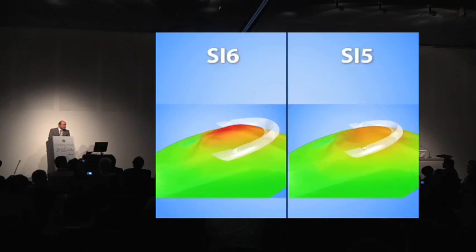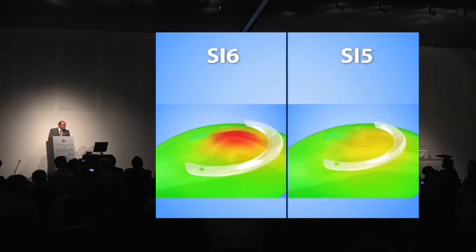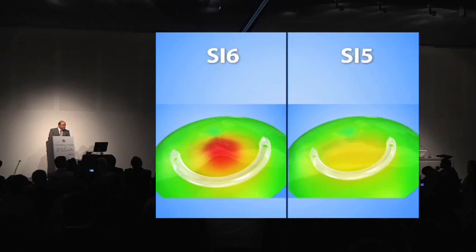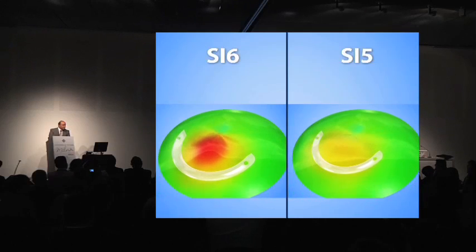This is the interface of the software — pre-op topography and simulated topography. We can enter one ring or two rings, and choose the diameter, thickness, and arc length.